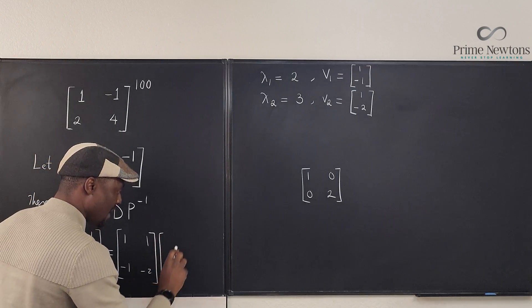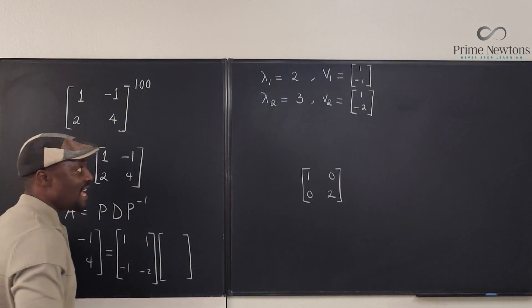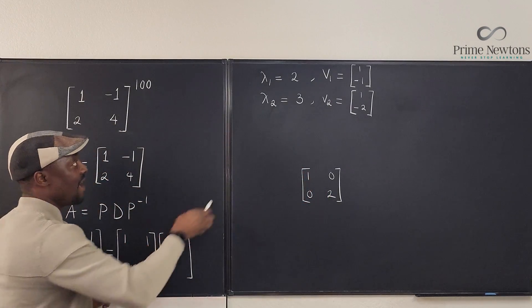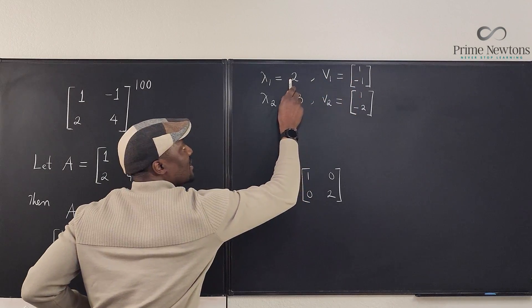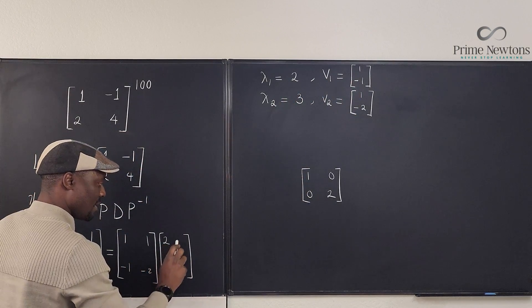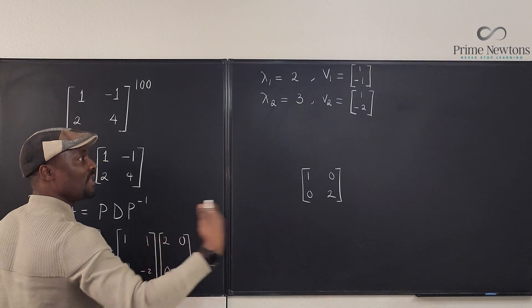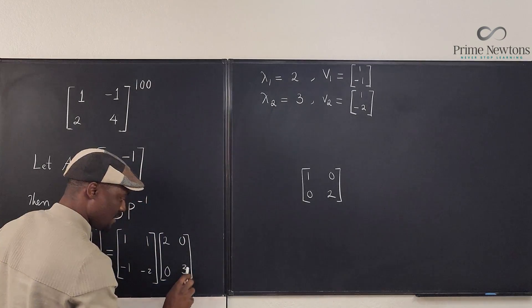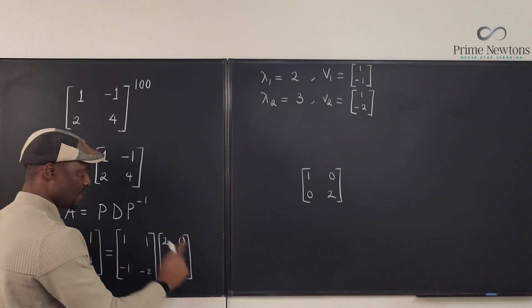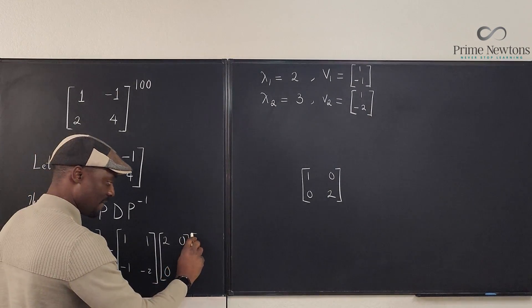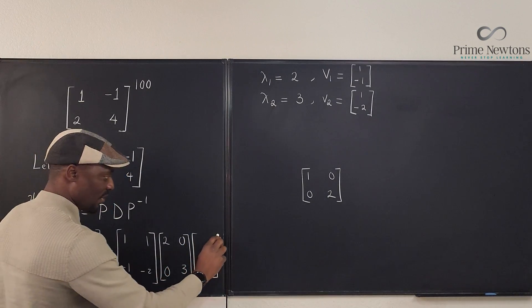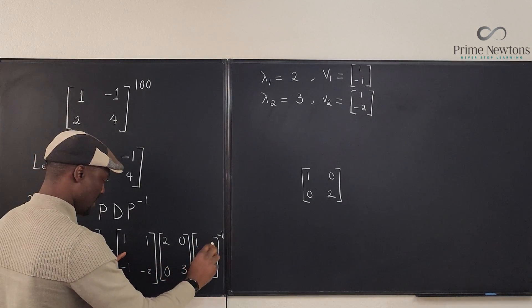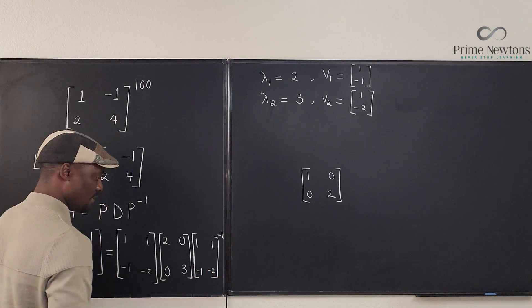What is D? It's the simplest part. Because I placed the eigenvector corresponding to eigenvalue 2 on the left and the eigenvector corresponding to eigenvalue 3 on the right, D = [2, 0; 0, 3]. And P⁻¹ is just [1, 1; -1, -2] inverted, which gives us [2, 1; -1, -1].